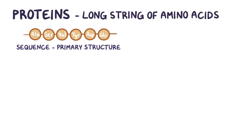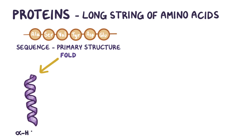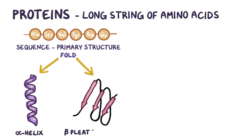These long chains of amino acids can fold to form different shapes, like an alpha helix, which is a right-handed coiled strand, and a beta-pleated sheet, which is when the chain folds so that the segments line up alongside each other. Each protein can contain multiple alpha helices or beta-pleated sheets.